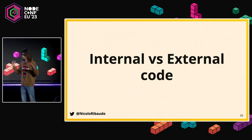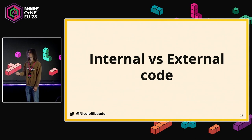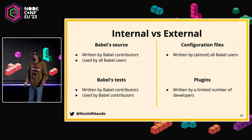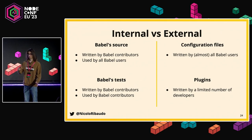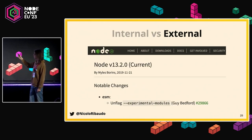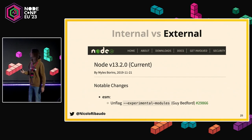Before starting migration, we had to decide how to migrate — what's internal code versus external code, what parts of the migration affect the most people, what's more dangerous, and what's more beneficial. We have Babel source code, written by a small group but used by every Babel user, and Babel tests, used by very few people. Externally, there are configuration files and plugins written and used by different amounts of people. External code was our initial focus because, back in 2019, ESM wasn't fully unflagged in Node, and we didn't want to hold back our users from using ESM.